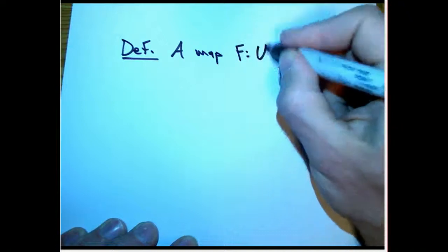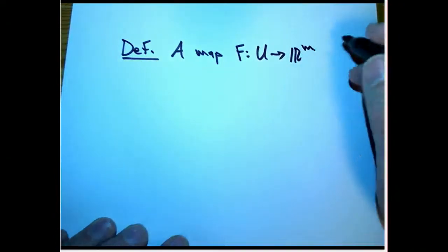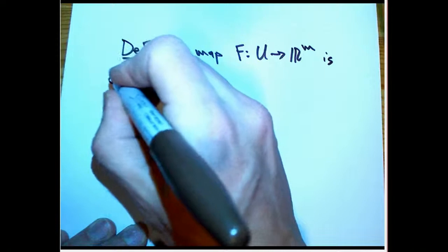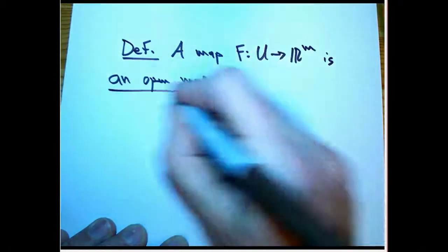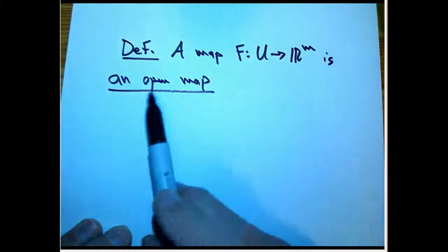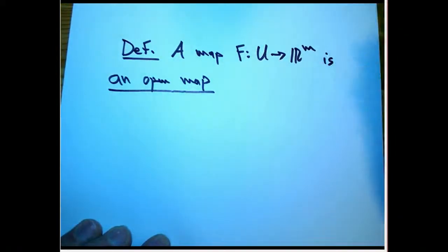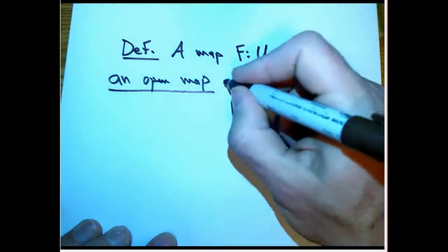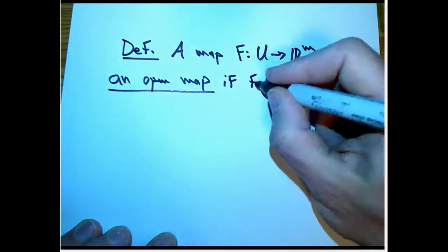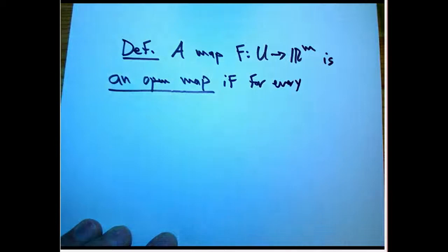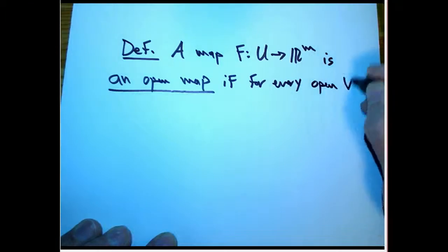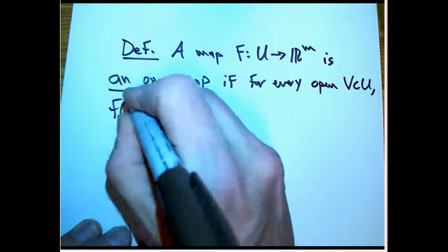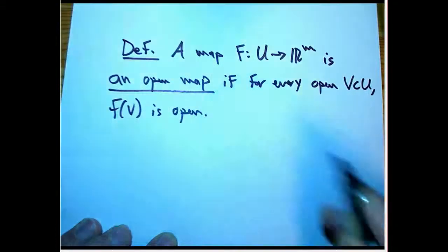I'm going to have F, again, from U to R^m, is an open map. You can just say it is open, but it's sometimes nice to not confuse it with open sets. Although, if you're being careful, there's not much confusion. It's an open map if for every, it's a very natural thing to define formally, but it's not something that's necessarily obvious when you first think about what it means. If for every open subset V in U, the direct image is open.